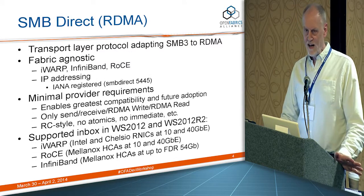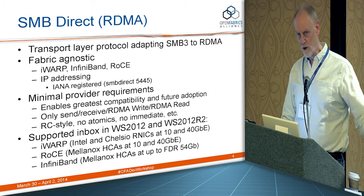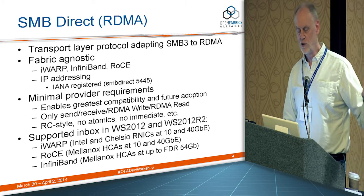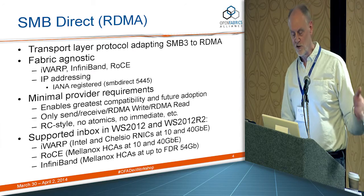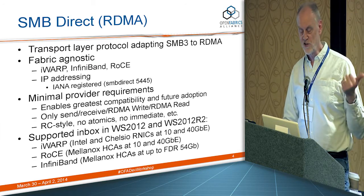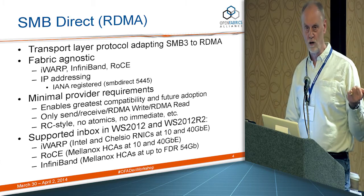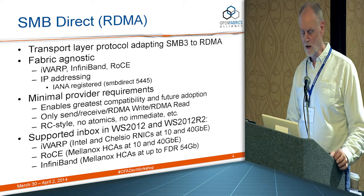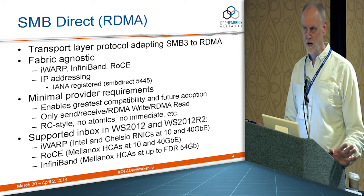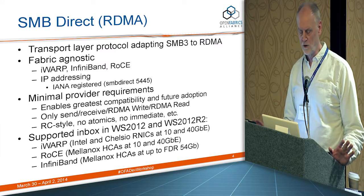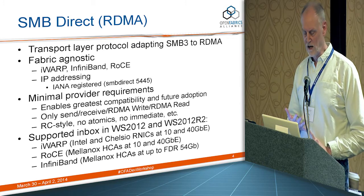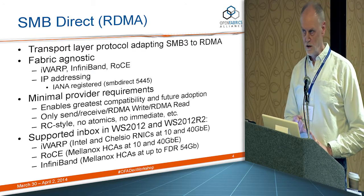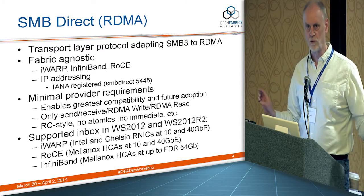SMB Direct — SMB over RDMA — is a transport layer protocol. It's another protocol shimmed underneath SMB that adapts SMB3, only the SMB3 dialect, to RDMA. It's fabric-agnostic, supports IWARP, InfiniBand, and RoCE equally, and uses IP addressing. It has an IANA-registered port — SMB Direct is 5445; 445 is the port for regular SMB over TCP. SMB Direct has very minimal provider requirements: it uses literally only send, receive, RDMA read, and RDMA write. It doesn't use atomics or immediate data. It only uses RC — no datagram.